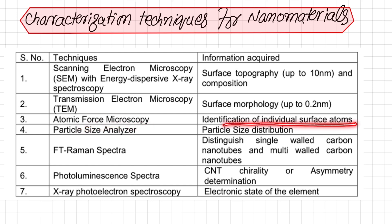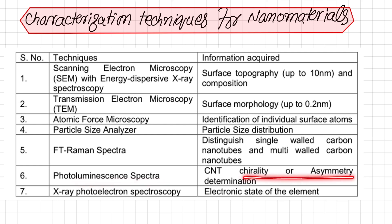The third technique is atomic force microscopy, which identifies individual surface atoms and their nature. Fourth is a particle size analyzer, which reveals the size of particles generated. Next is FT-Raman spectra, which distinguishes between single-walled carbon nanotubes and multi-walled carbon nanotubes.